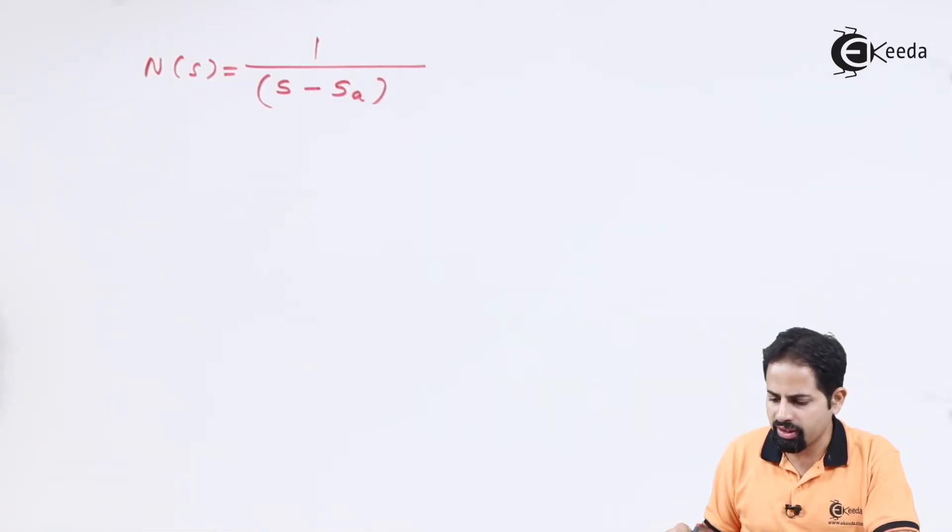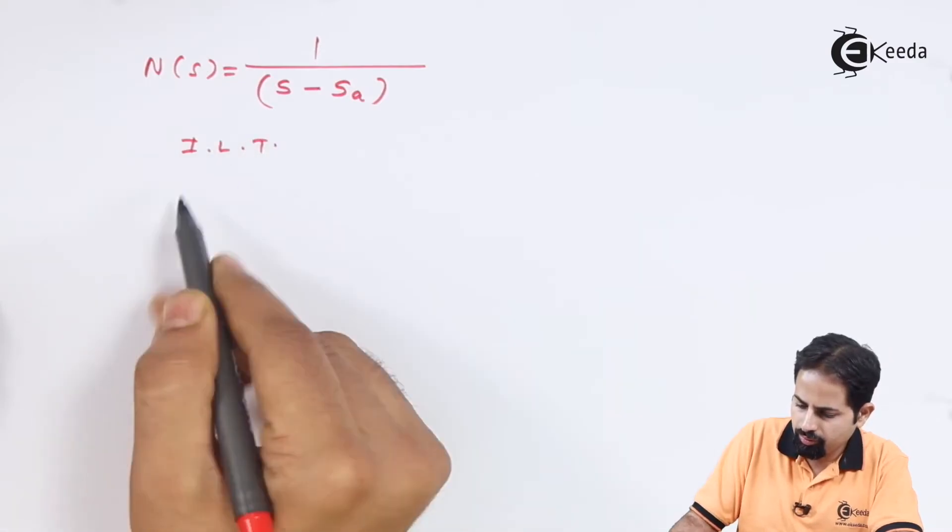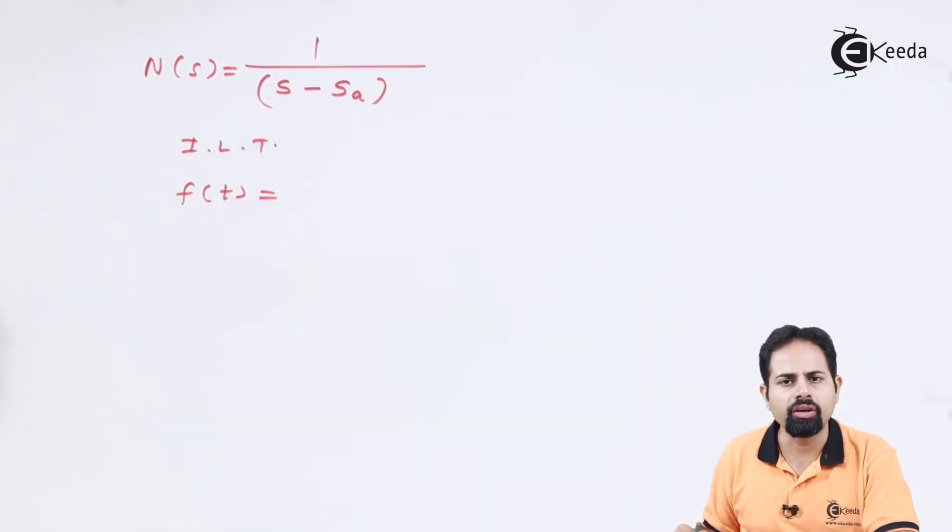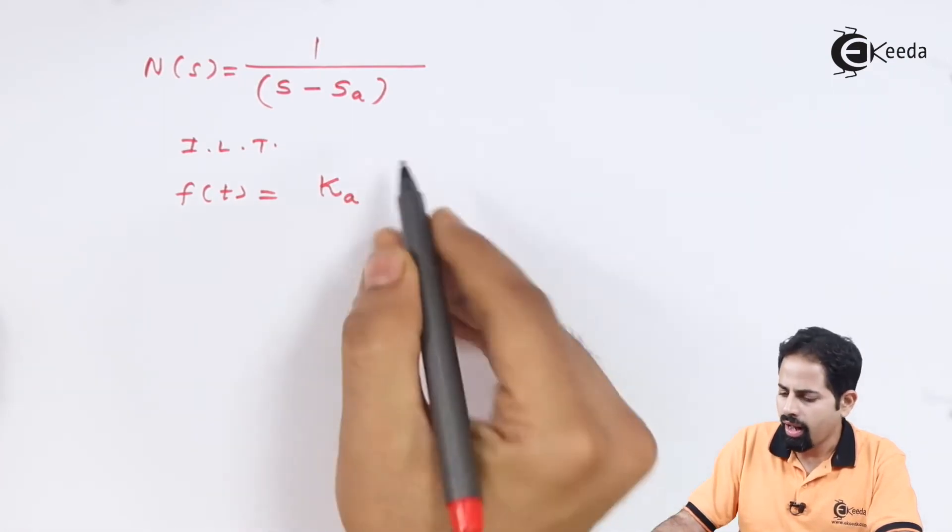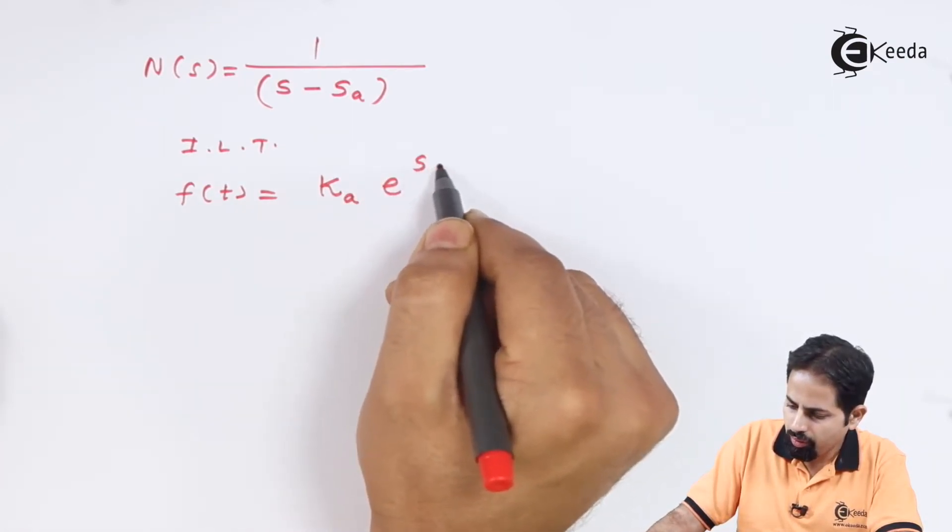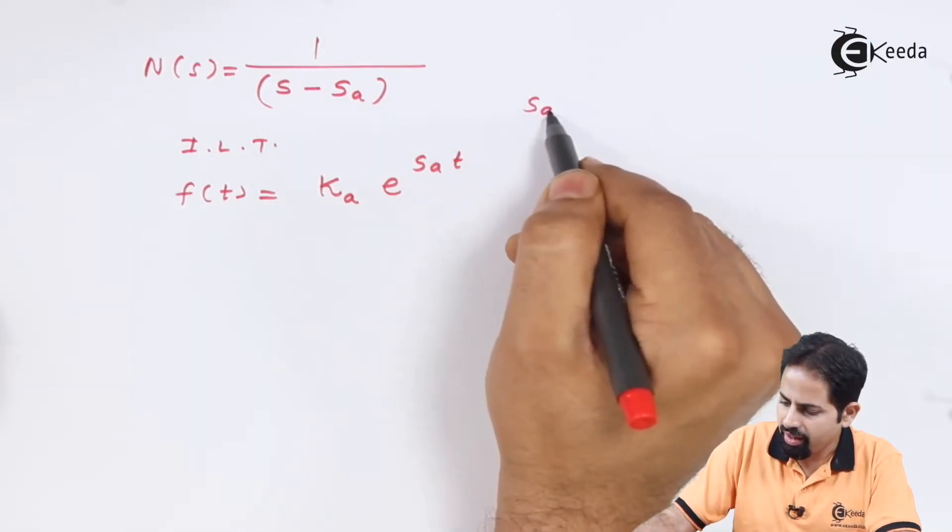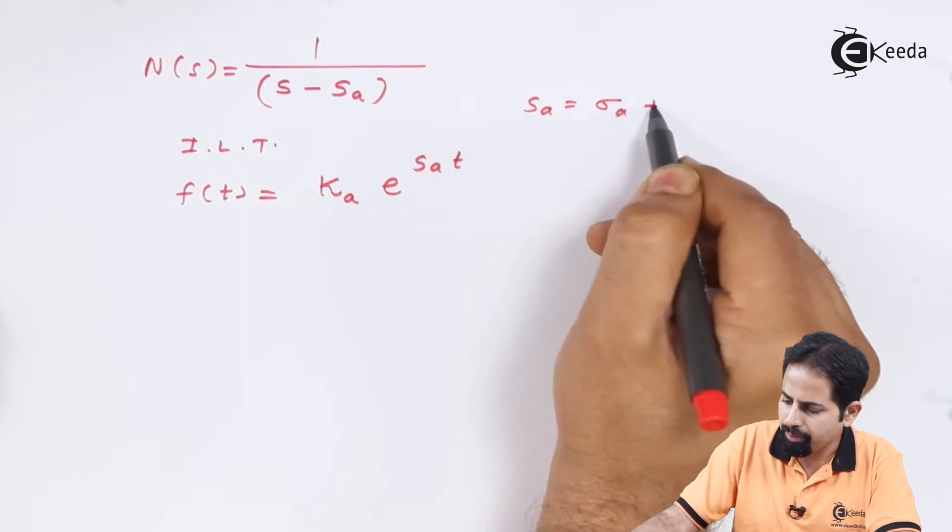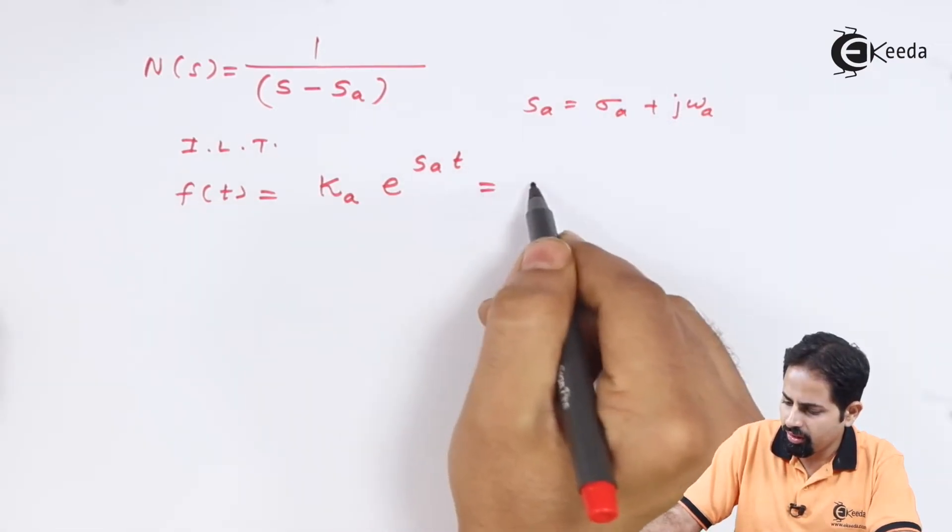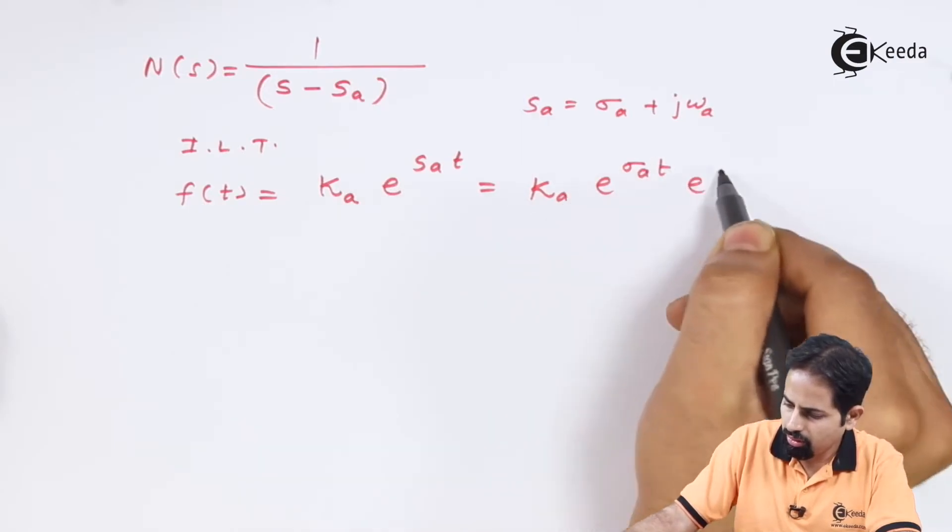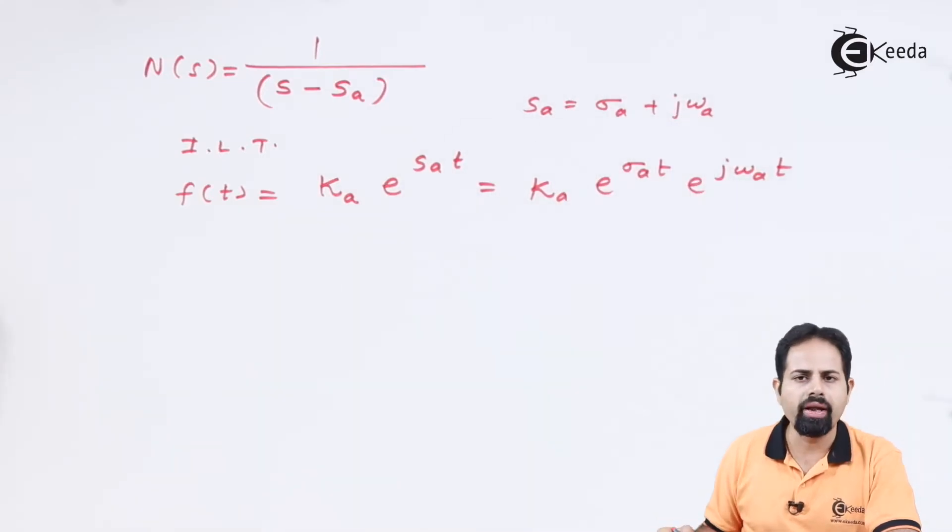Now, if you take the Laplace inverse for this, definitely it will result in given function equal to some constant K. Let us say it is KA and E rest to SA T. Now, what is this SA? SA is sigma A plus J omega A. So we will write it here.